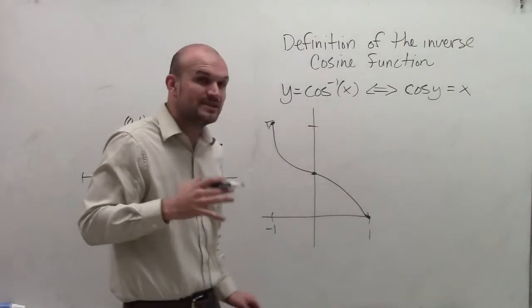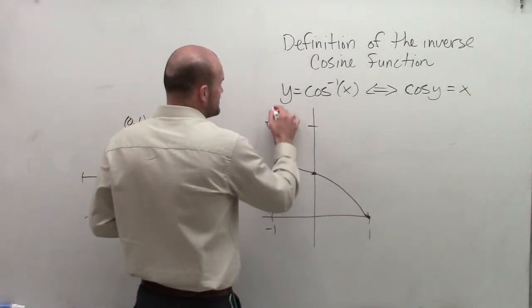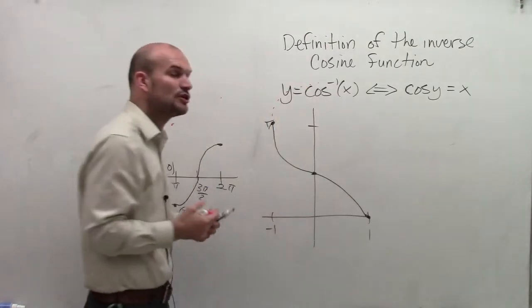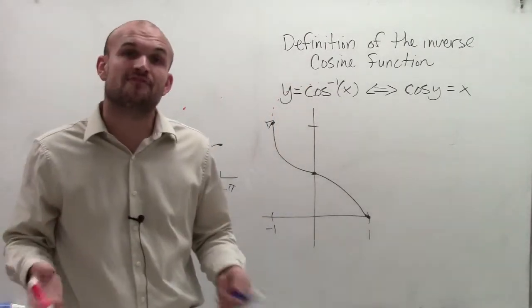We don't graph the rest of the function, because if I was to continue this function on, what you notice is my graph would now violate the vertical line test, therefore not being a function at all.